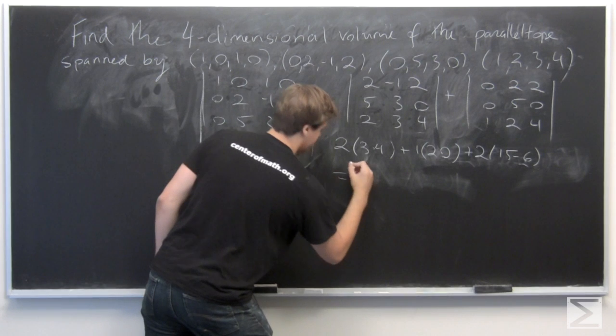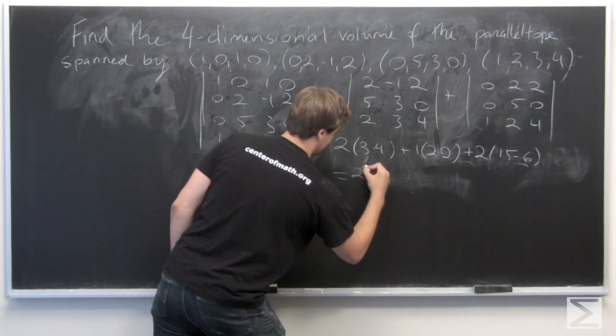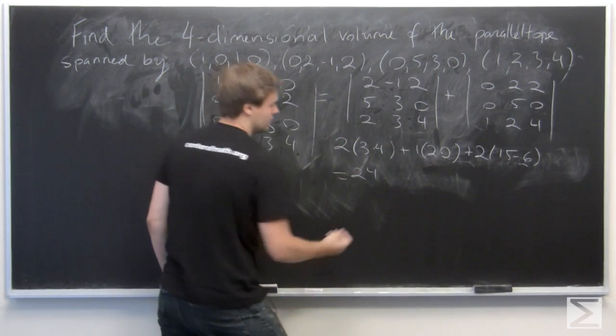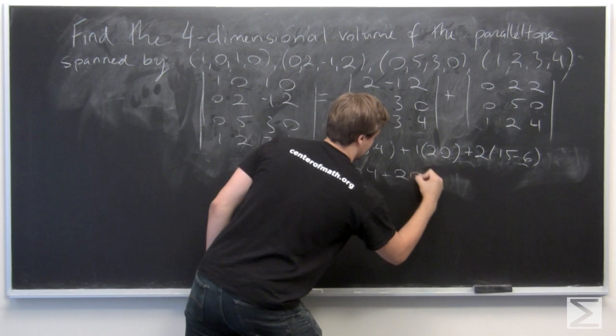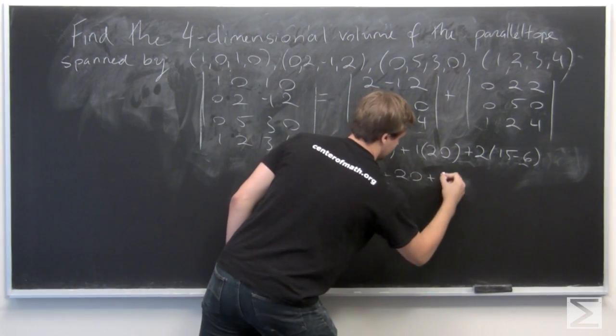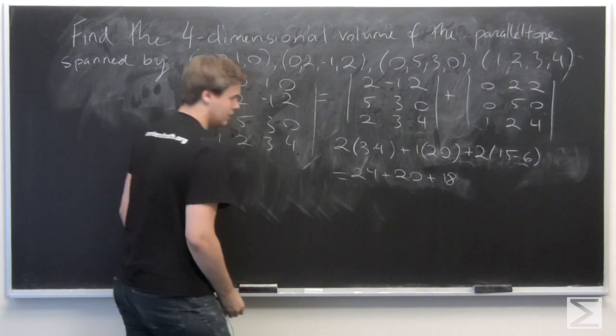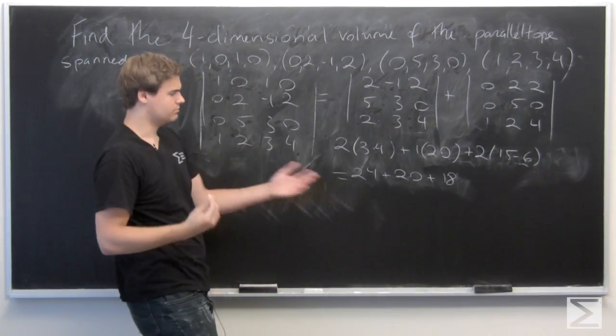Simplify and we get: this is 24, 2 times 12, plus 20, plus 18, and that's 62.